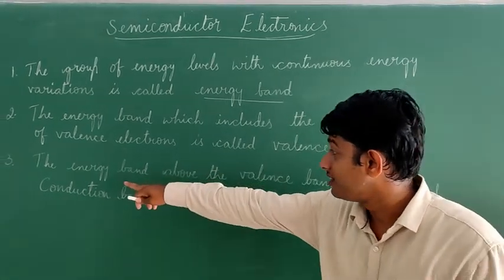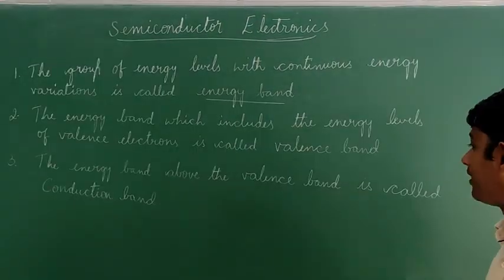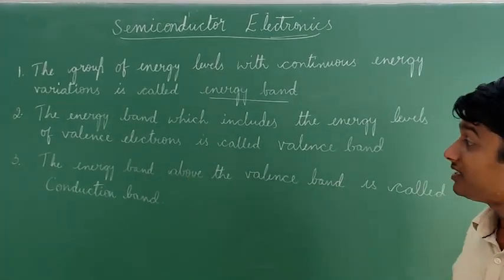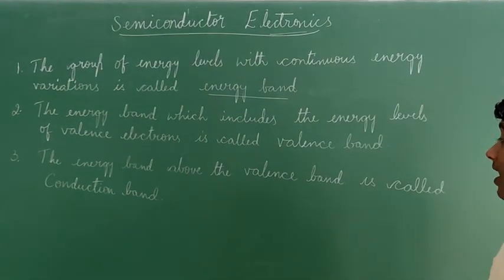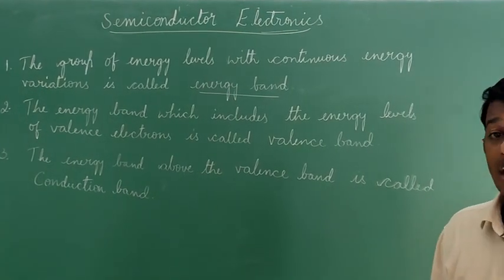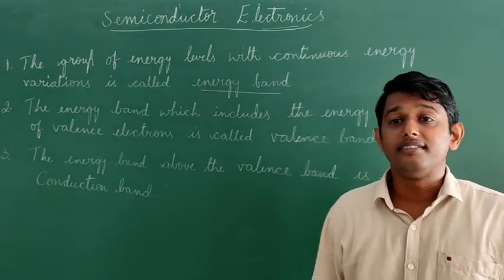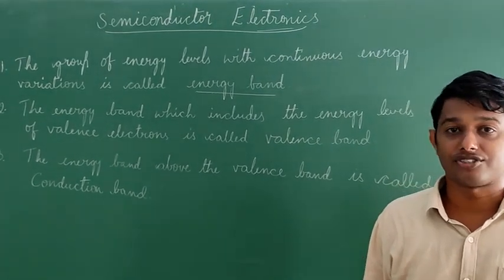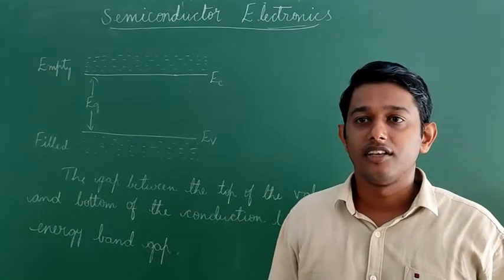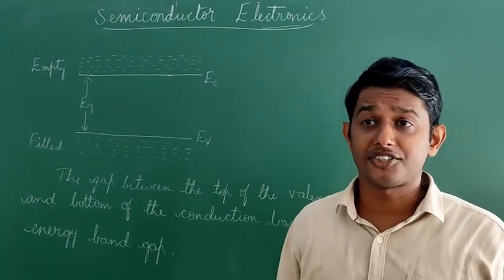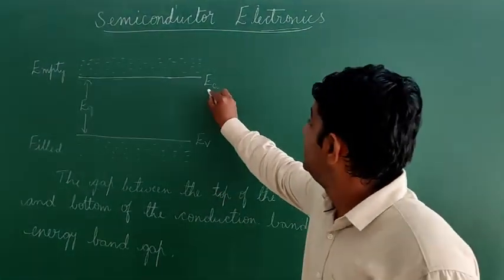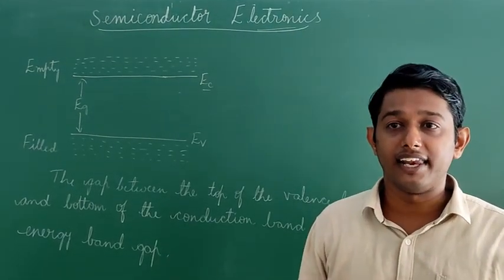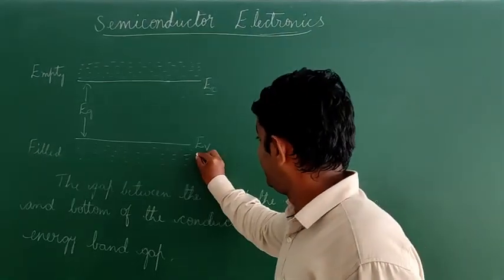The energy band above the valence band is called the conduction band. Normally, the conduction band is empty or occupied by free electrons. The lowest energy level in the conduction band is shown as E-C, and the highest energy level in the valence band is shown as E-V.